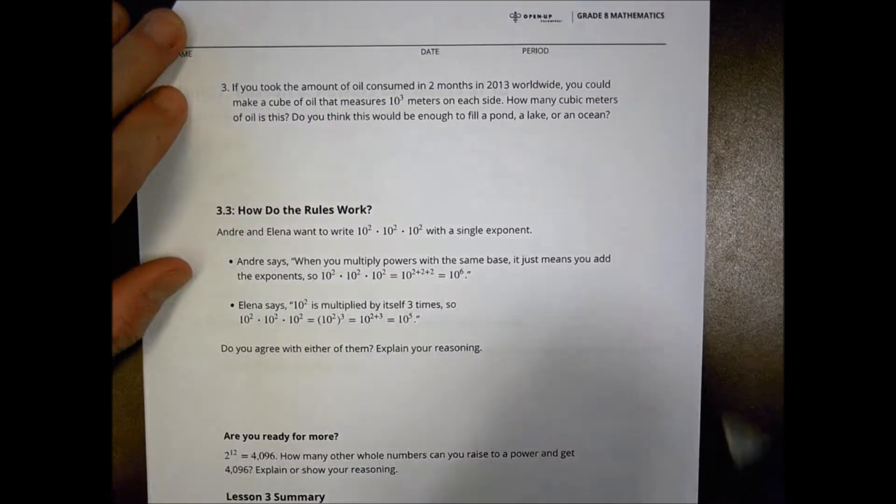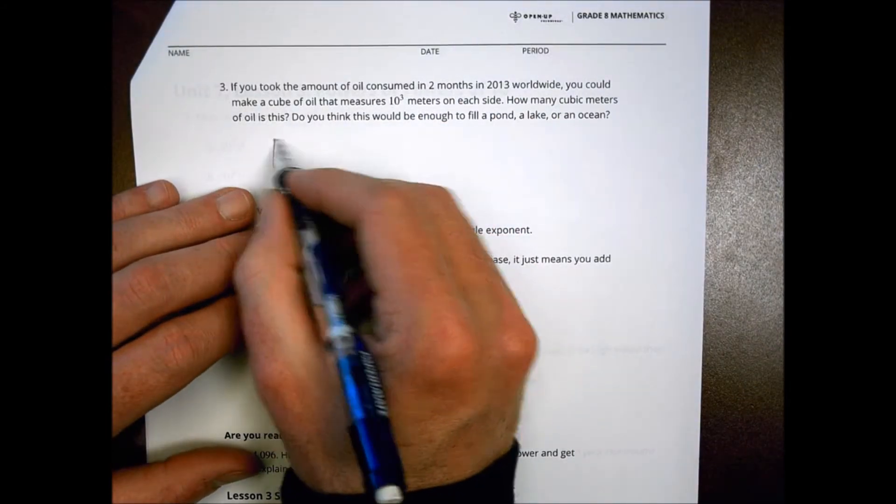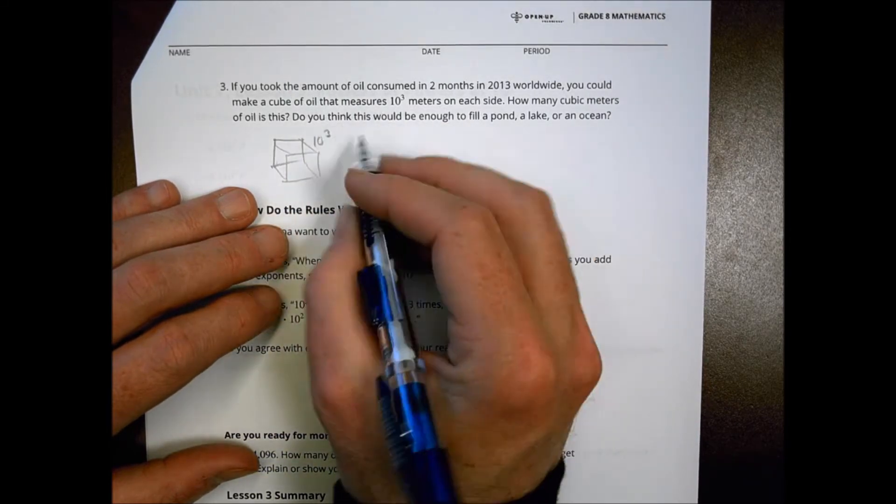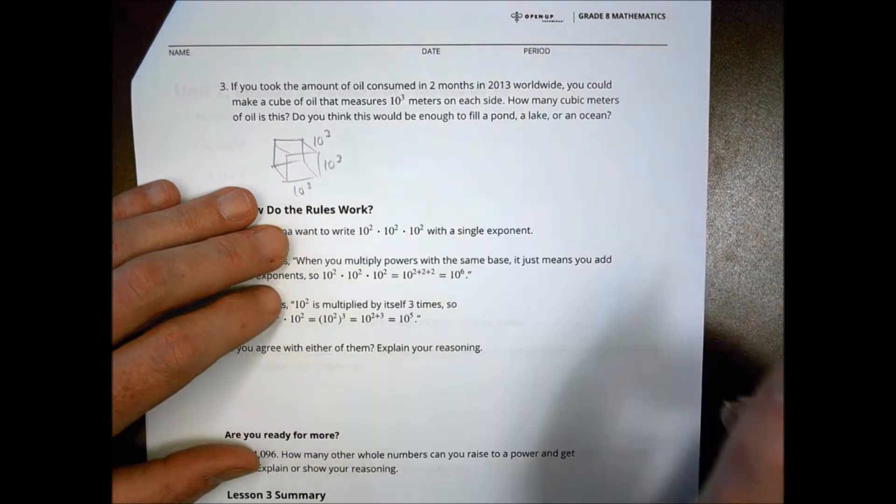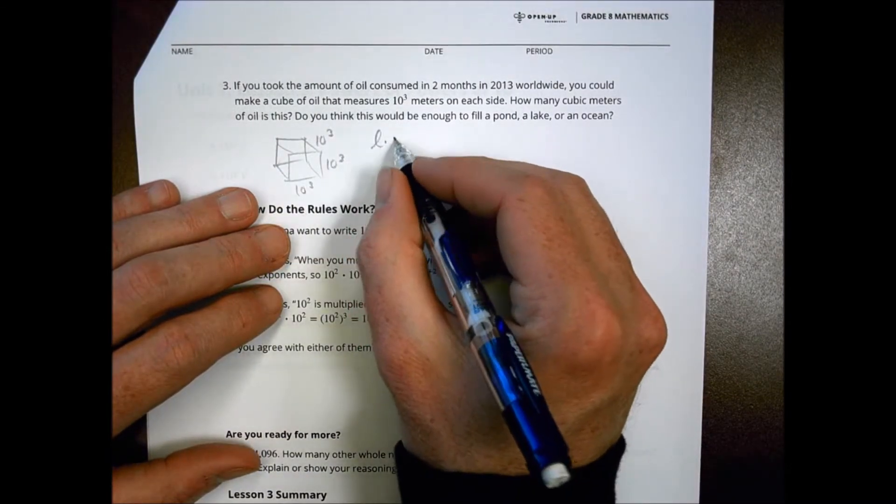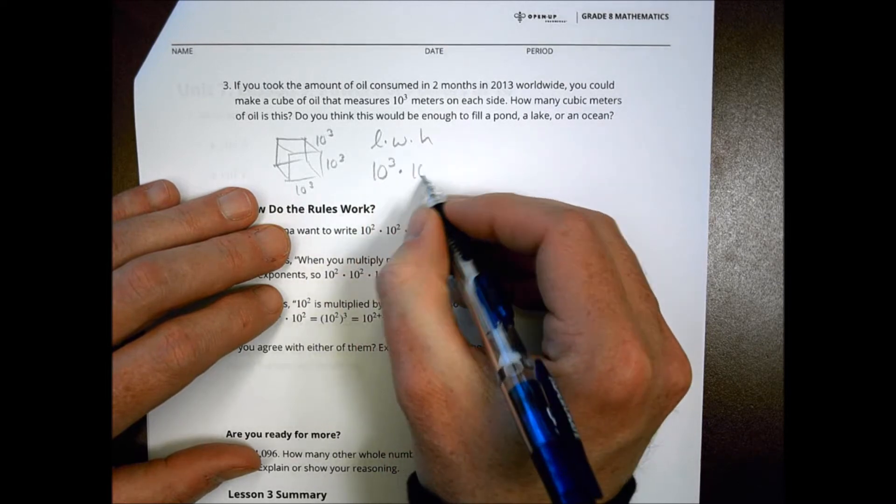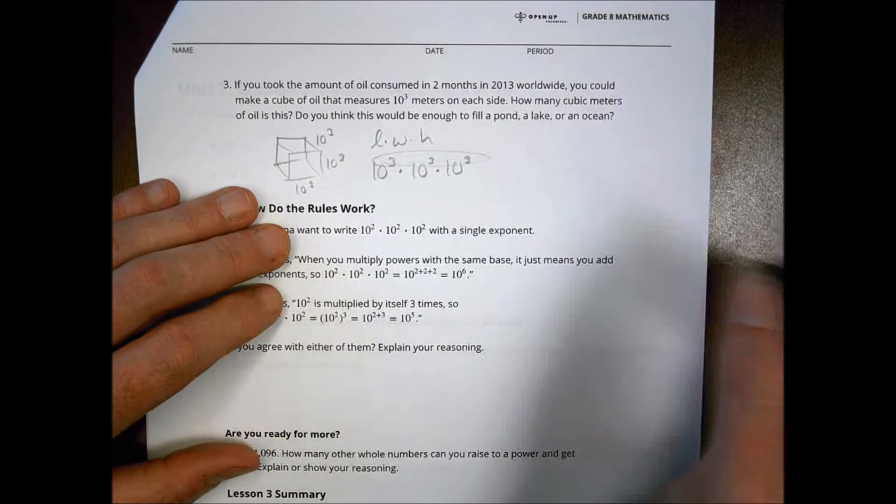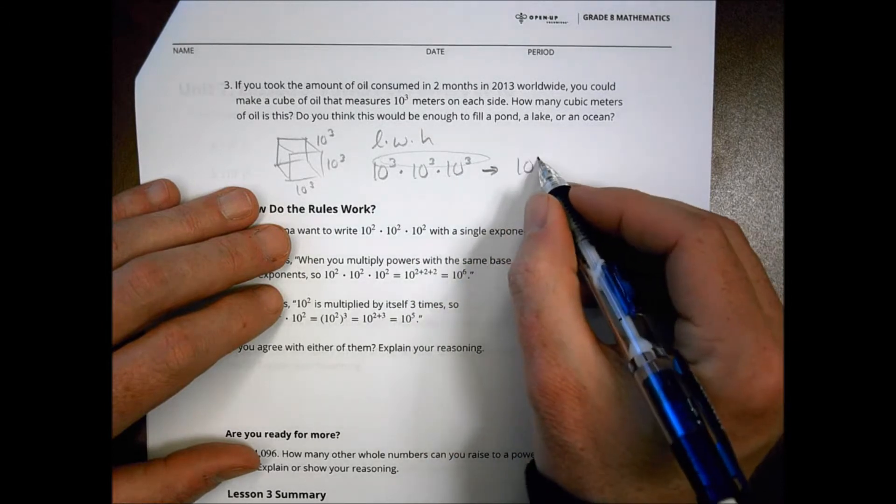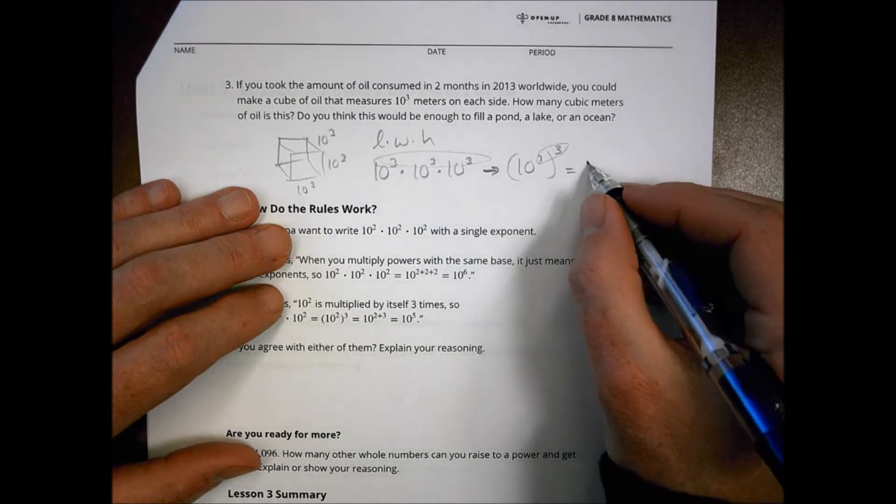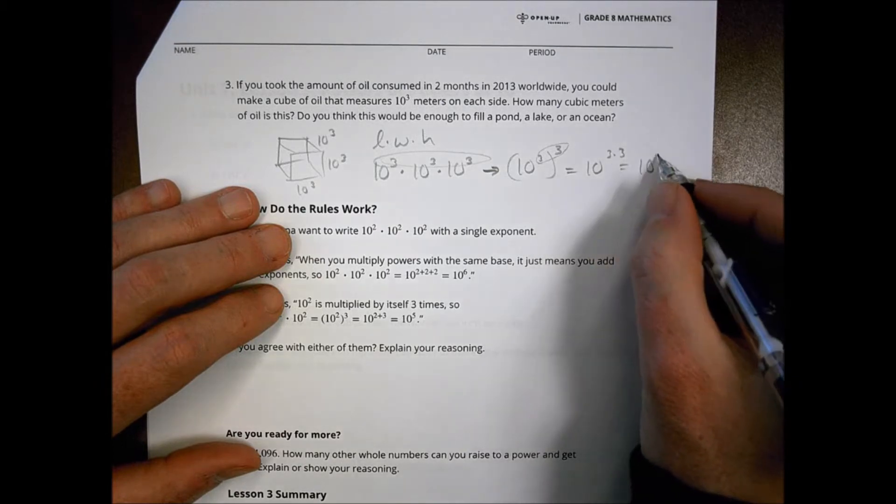Let's take a look at an example. On the next page, number 3, it says if you took the amount of oil consumed in two months in 2013 worldwide, you can make a cube of oil that measures 10 to the third meters on each side. How many cubic meters of oil is this? Again, to do a volume, that is the length times the width times the height. In our case here, it's 10 to the third times 10 to the third times 10 to the third.